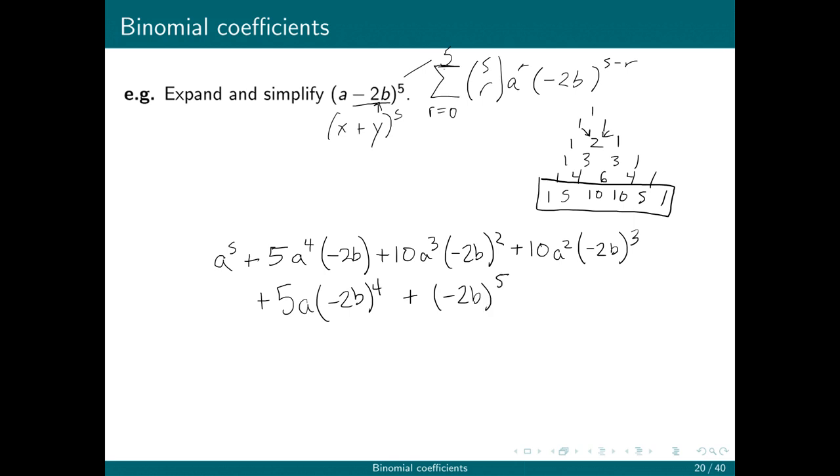So that's the expanded binomial, but it also says to simplify. So we're going to do that as well. A to the fifth doesn't need any simplification. This next term is negative because it's 5 times negative 2. So that's going to be minus 10a to the 4b.